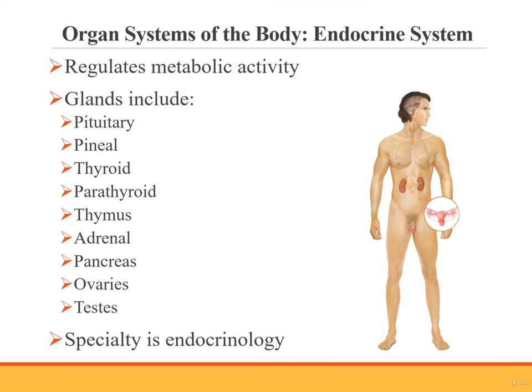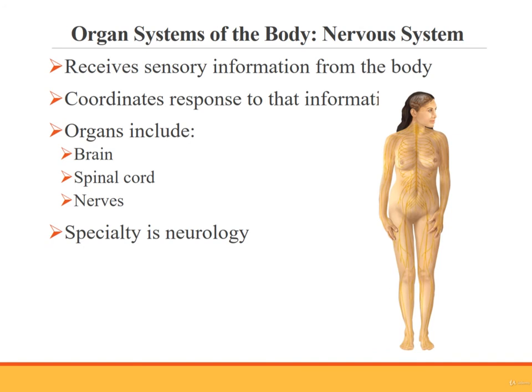The endocrine system is responsible for regulating the metabolic activities of the body. Organs of the endocrine system are the pituitary gland, pineal gland, thyroid gland, parathyroid glands, thymus gland, adrenal glands, pancreas, ovaries, and testes. Endocrinologists care for this system. The nervous system receives sensory information and coordinates the body's response to that information. Organs of the nervous system are the brain, spinal cord, and nerves. Neurologists care for the nervous system. Neurosurgeons also care for the system.